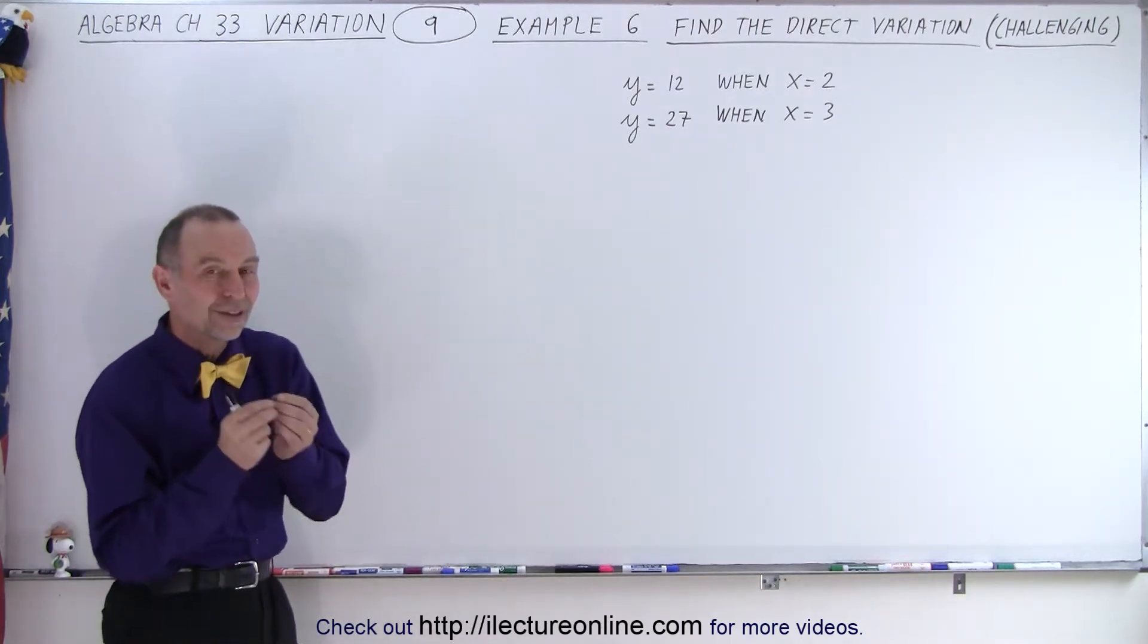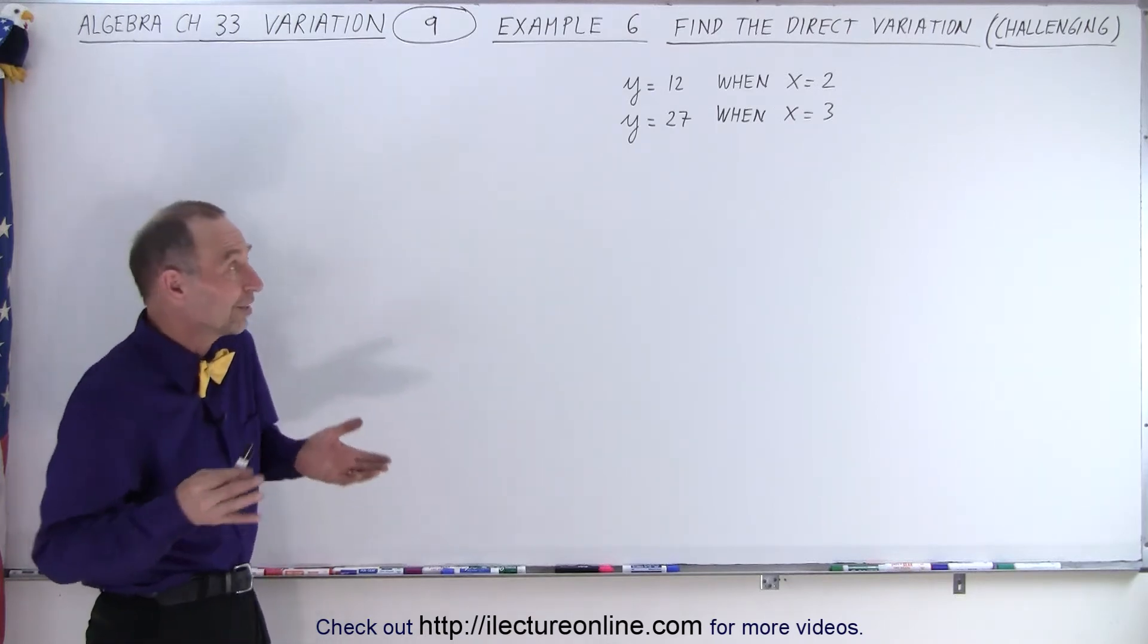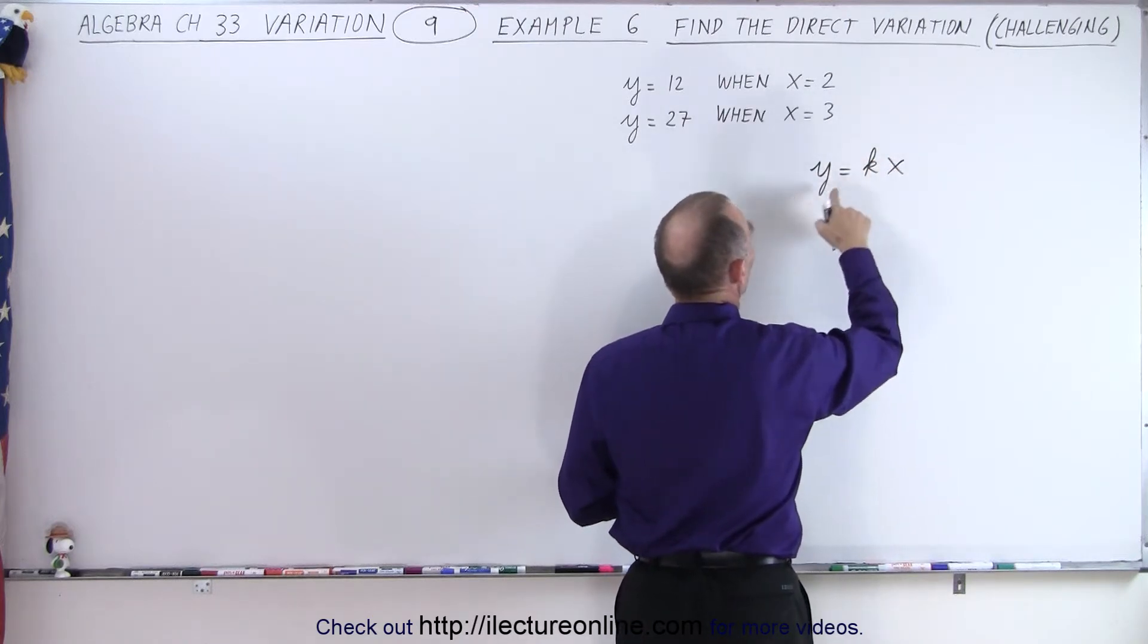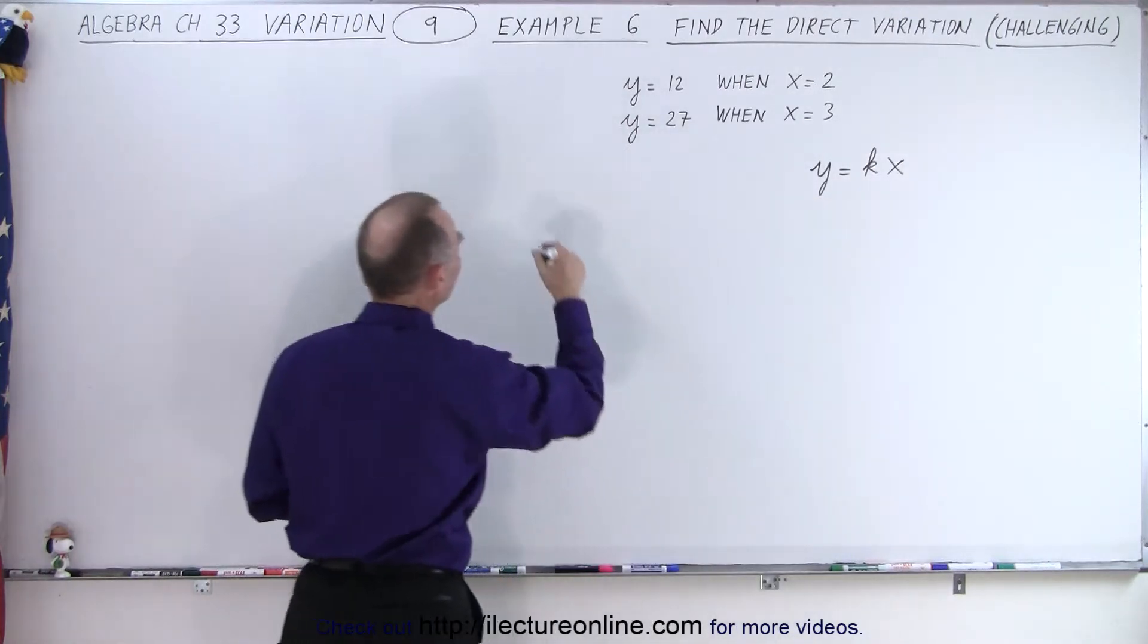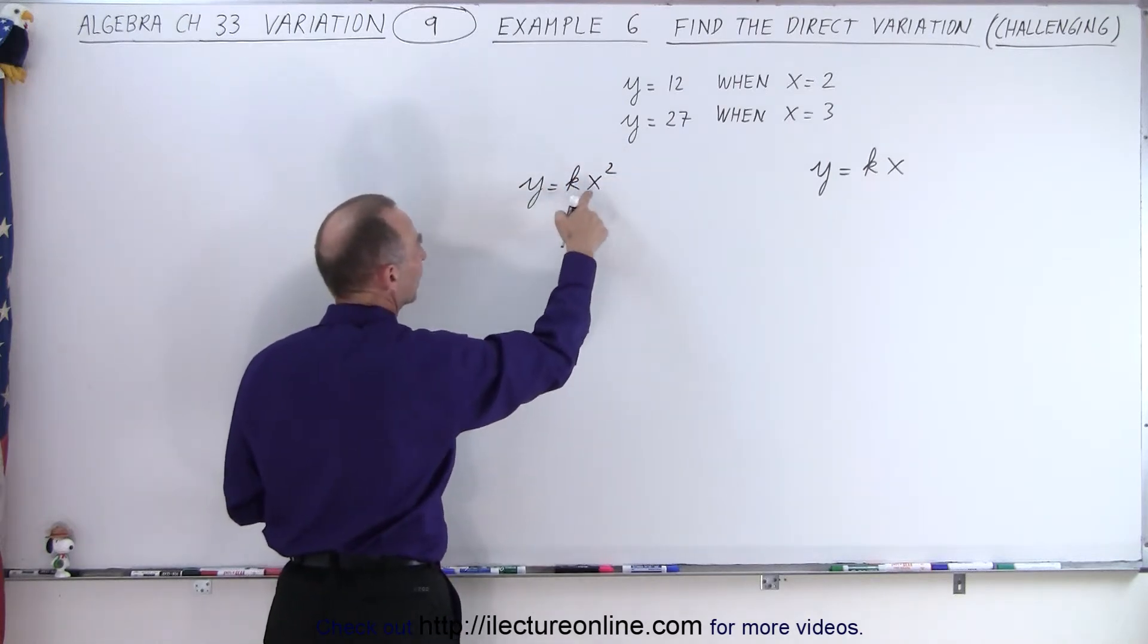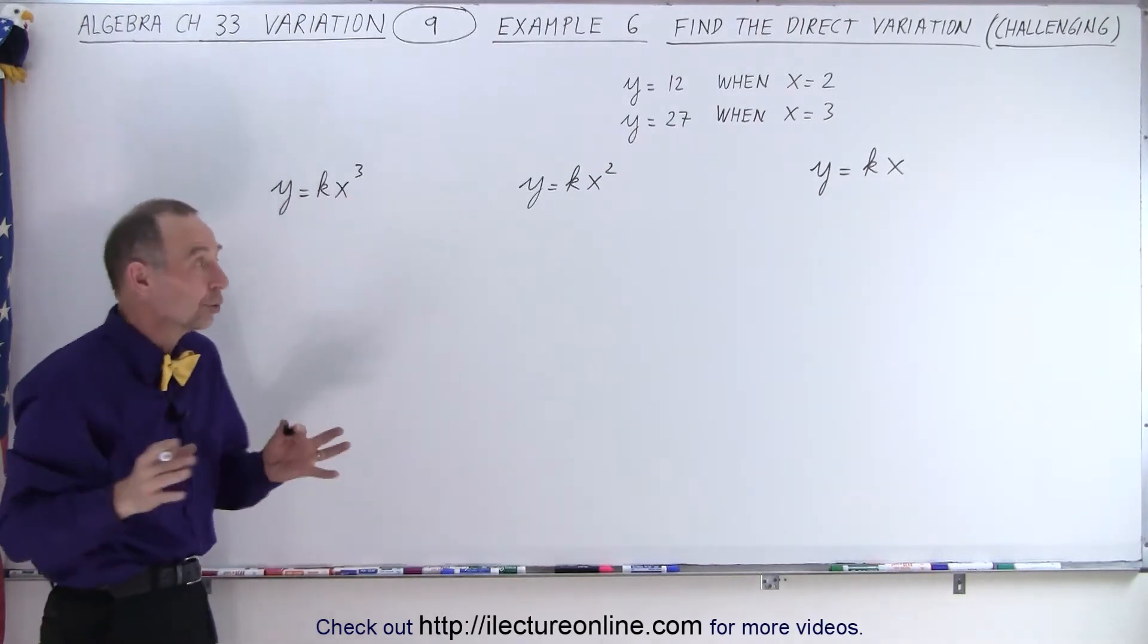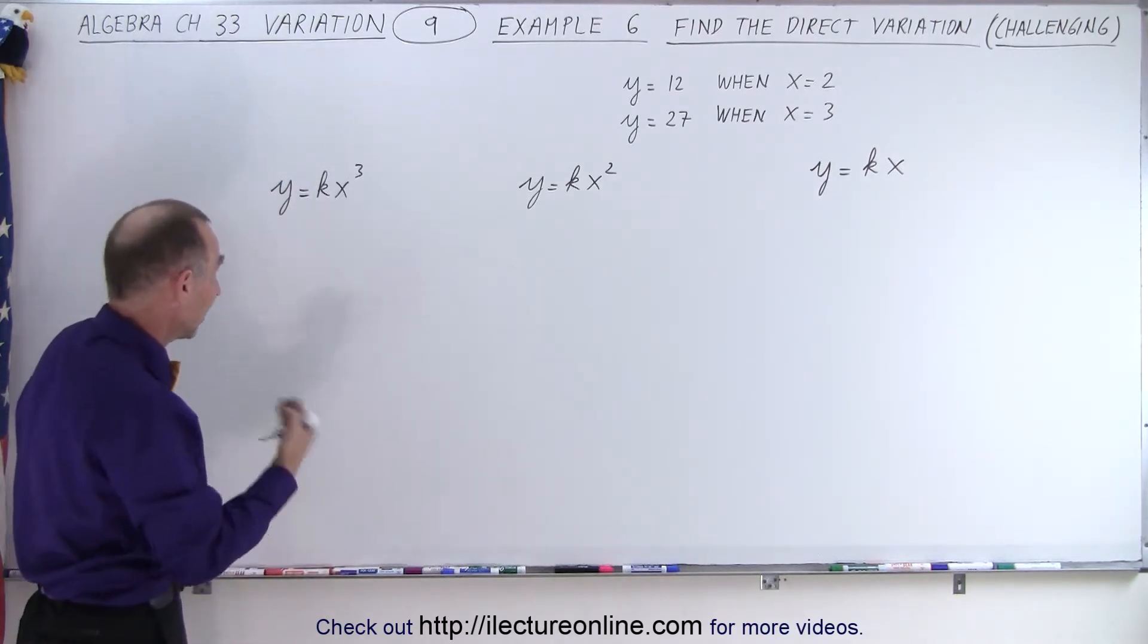Here we're told that it's the direct variation, so y directly varies with some form of x, but we're not told exactly what form. For example, we could have y equals kx, so y is directly related to or directly varies with x to the first power, or we can have y equals kx squared, so that y varies directly with x squared, or we could have y equals kx cubed. We don't know.